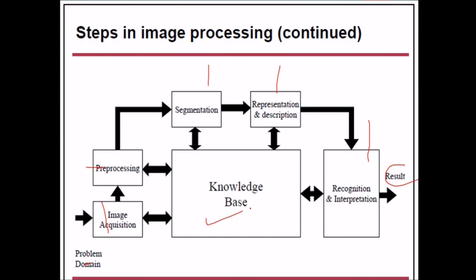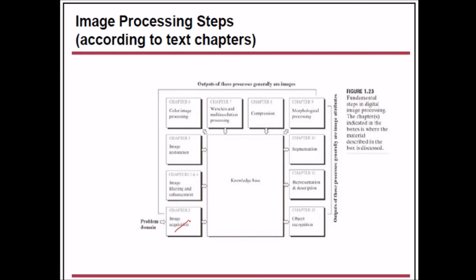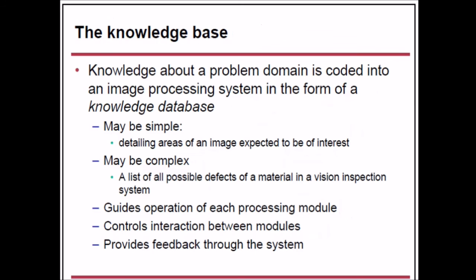Every step in the pipeline has access to a knowledge base. Knowledge about a problem domain is coded into the image processing system in the form of a knowledge database. This may be simple — detailing areas of an image expected to be of interest — or complex, such as a list of possible defects of materials in a vision inspection system. The knowledge base guides the operation of each processing module, controls interaction between all modules, and provides feedback throughout the system.